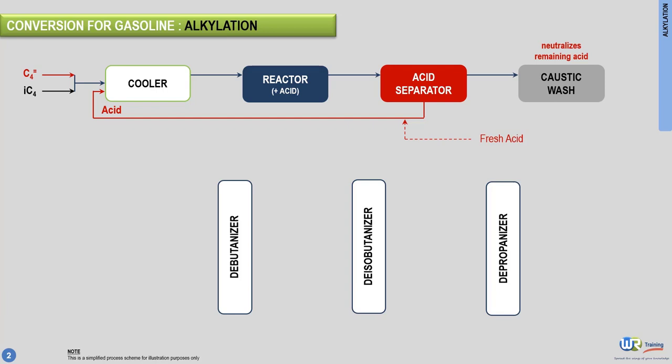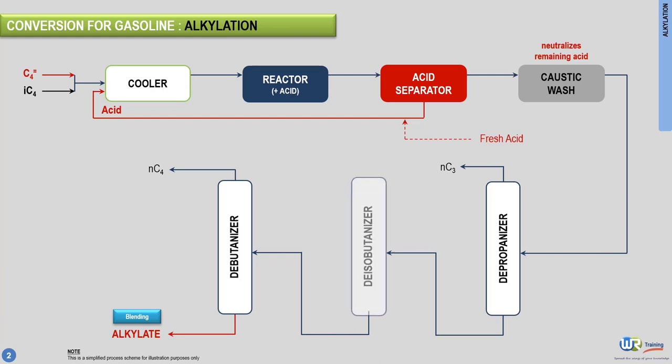Finally, three standard splitters separate the alkylate from light products. The alkylate is recovered at the bottom of the debutanizer and, as discussed previously, constitutes a good quality blending component for gasoline. The deisobutanizer, which is the second splitter downstream the reactor, is extremely essential to the alkylation process. This unit separates the isobutane that did not react and recycles it back to the alkylation feed.